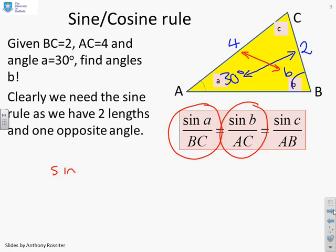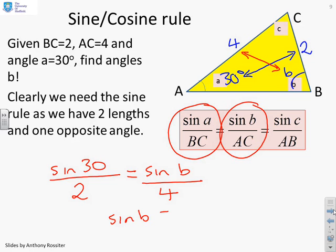And I'm going to put that equal to sine B, B I don't know, divided by AC, which I do know, which is 4. And clearly, I can rearrange all of this to write sine B equals 4 over 2, sine 30. And if you stick that in your calculator, you'll find this gives you 1.